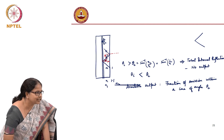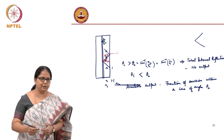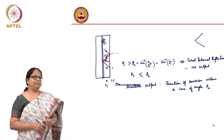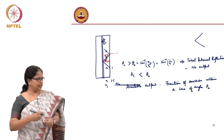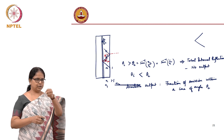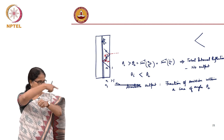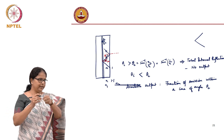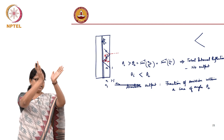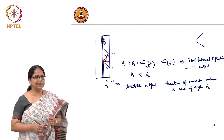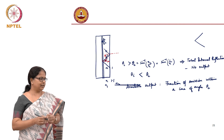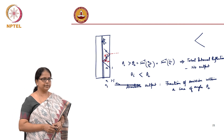Now, how do you find that fraction? You want to find the fraction of emissions — you can think of it as number of photons or number of rays. You have a point source emitting in all directions, and you want to find out what fraction of all directions corresponds to a cone. That fraction tells me the quantum efficiency because of total internal reflection.